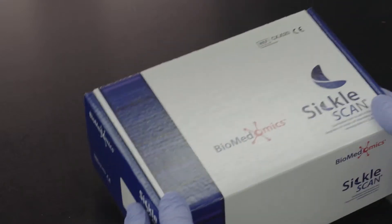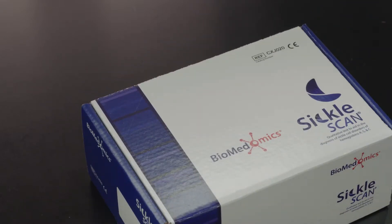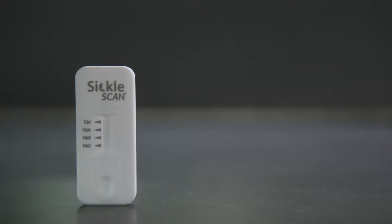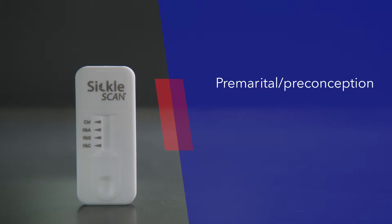Now, SickleScan provides quick and accurate results in the detection of hemoglobin A and mutated hemoglobins S and C, all in one easy-to-use field test. This test allows the user to distinguish between normal, carrier, and diseased patients—all vital information when making treatment and lifestyle decisions to manage the disease.